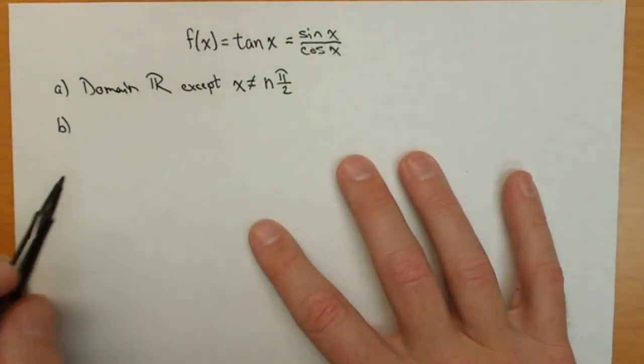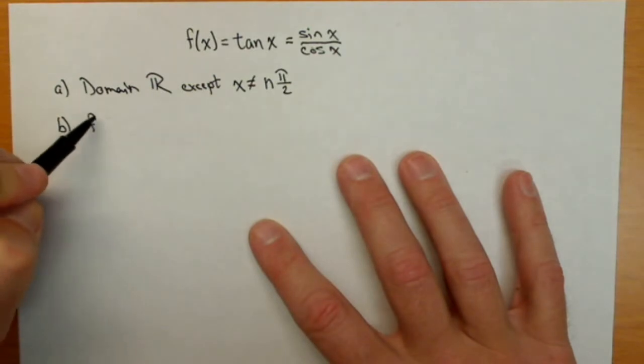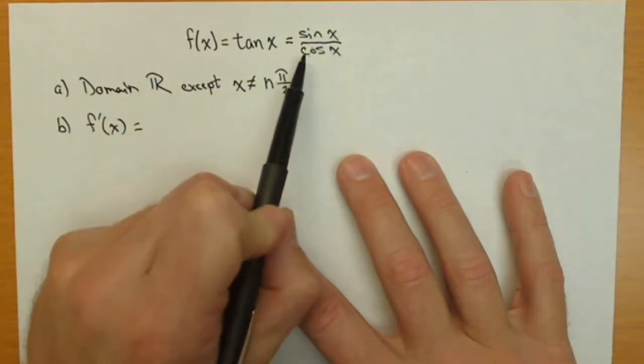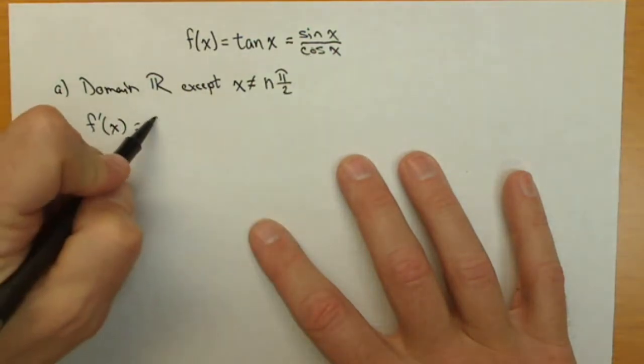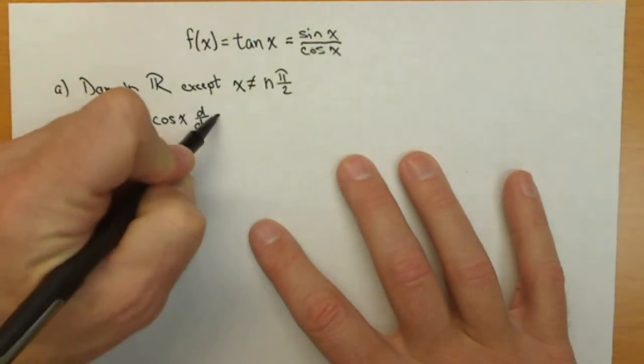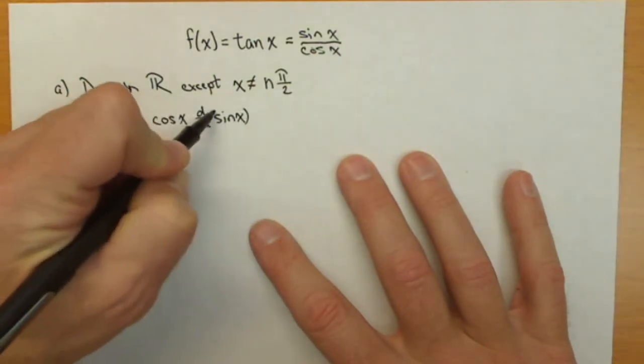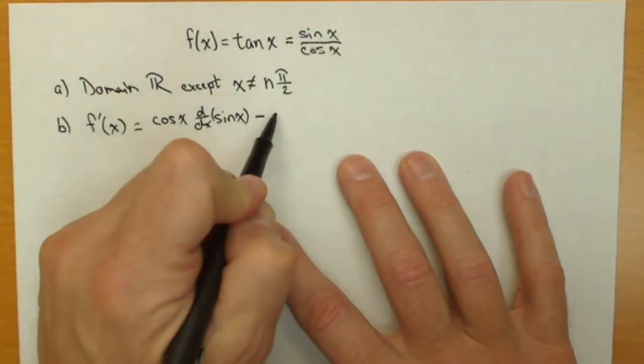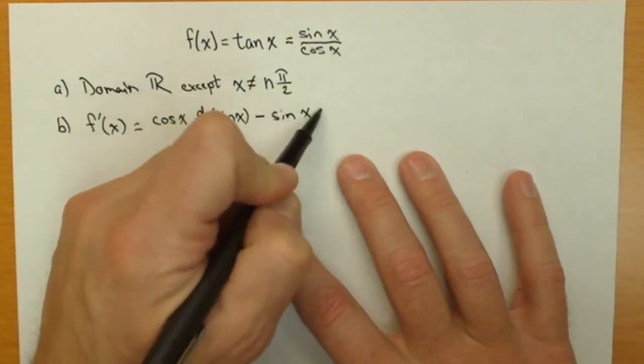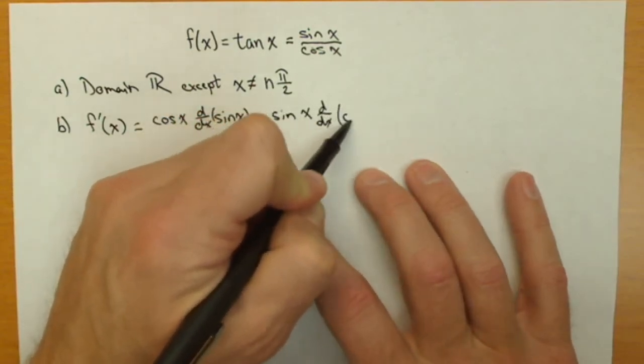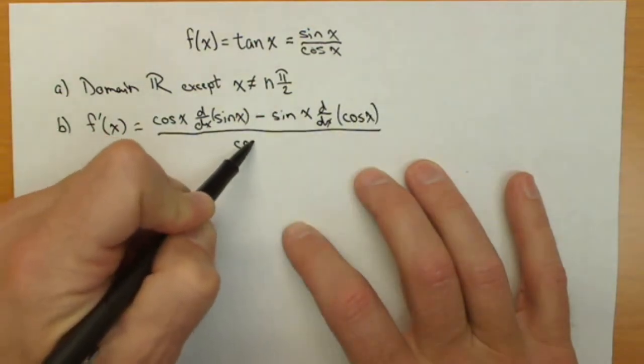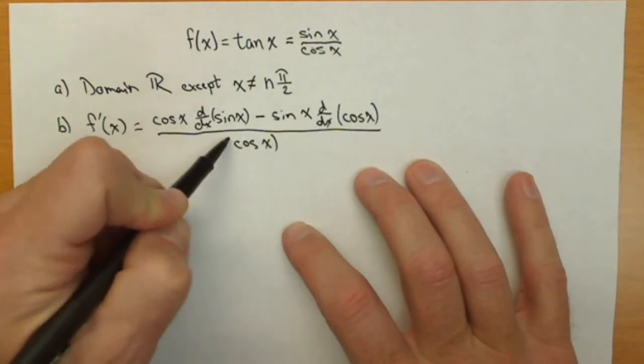Now let's go ahead and find our derivative by applying the quotient rule to our quotient here. So, quotient rule says, it's the denominator times the derivative of the numerator minus the numerator times the derivative of the denominator, all over the denominator squared.